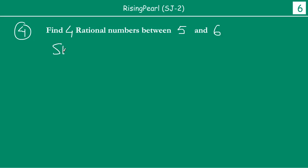Let's go again with step 1. It's a two-step technique. In step 1, हम पहले लिखते हैं कितनी numbers चाहिए — in this case, it is 4. उसके साथ एक जोड़ते हैं, so we get 4 plus 1 equals 5.